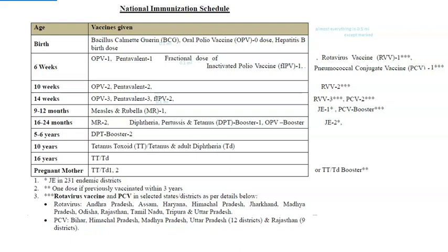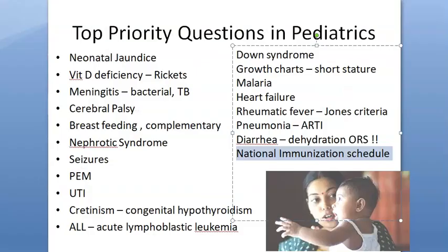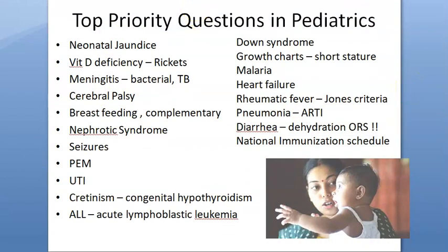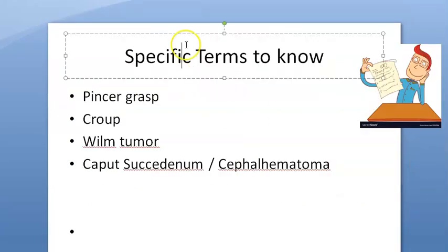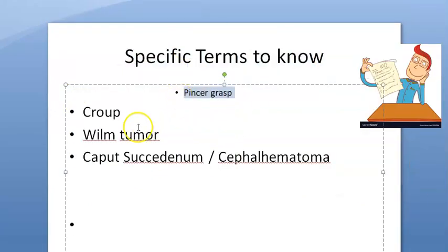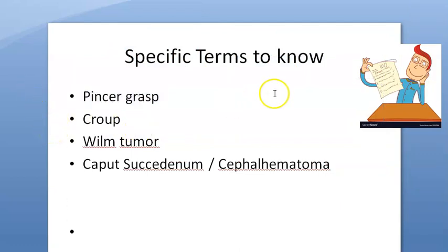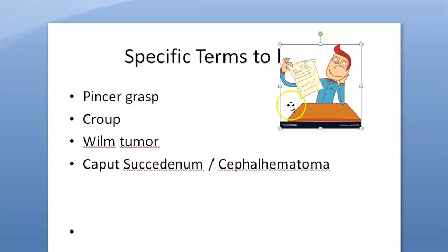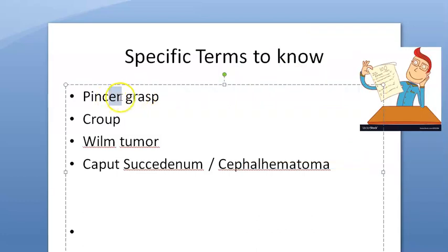In endemic areas, vaccines like rotavirus, pneumococcal, and Japanese encephalitis are given where relevant. Now, specific terms you should know: pincer grasp is a fine motor skill — using thumb and index finger to hold things; the child has a mature pincer grasp at one year. Croup is caused by laryngotracheobronchitis — read all about it.